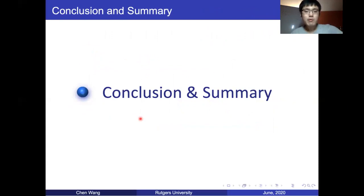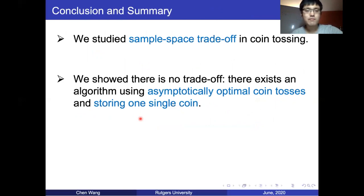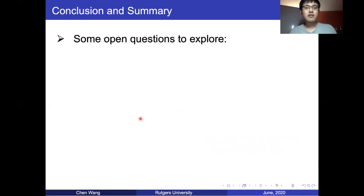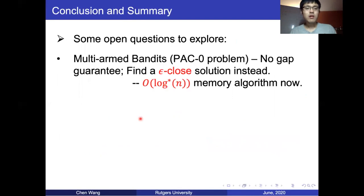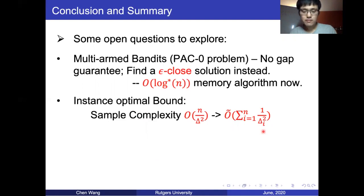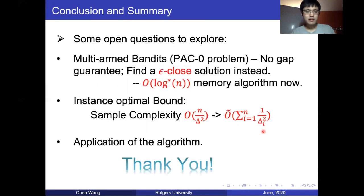In conclusion, in this paper we studied the sample-space trade-off in the coin tossing problem. We showed there is no trade-off: there exists an algorithm using asymptotically optimal coin tosses and storing only one coin. We also extended the results to finding top-k coins, noisy comparisons, and multi-armed bandits. Open questions include: for multi-armed bandits, extending from O(log* n) memory to a one-memory algorithm; and obtaining an instance-optimal bound — instead of O(n / δ²) sample complexity, perhaps achieving a sum of 1/δ_i² where δ_i is the gap between coin* and the i-th coin. Thank you.